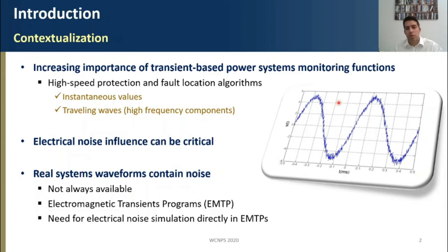A way to evaluate the electrical noise influence during the development of time domain functions is the use of real systems waveforms that contain noise already present in the waveforms. However, real records are not always available in such a way that the way to best represent these transients is using electromagnetic transient programs, called here EMTP programs.